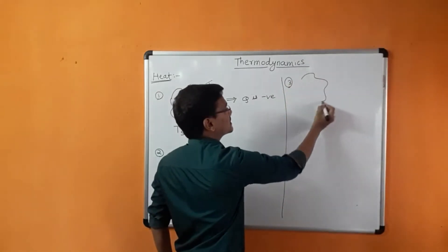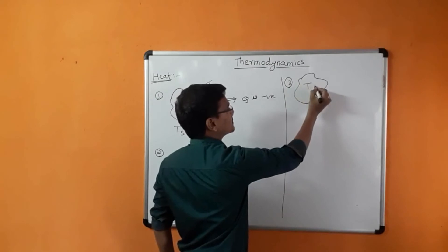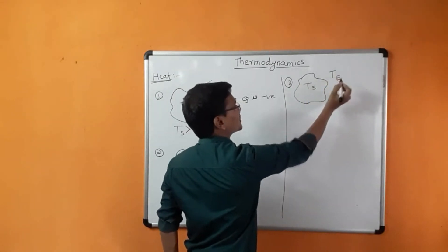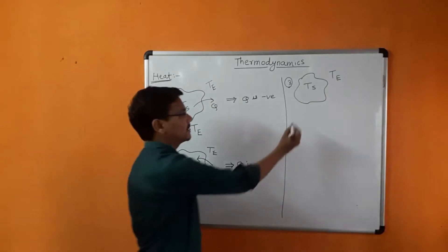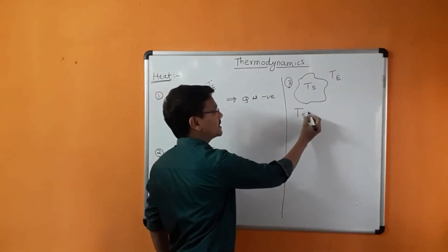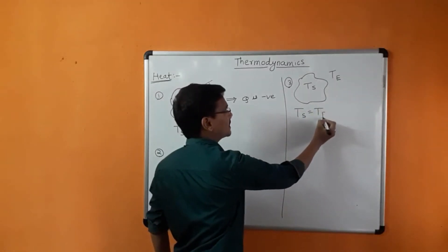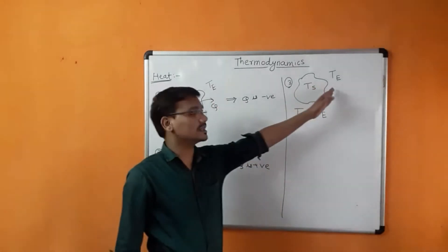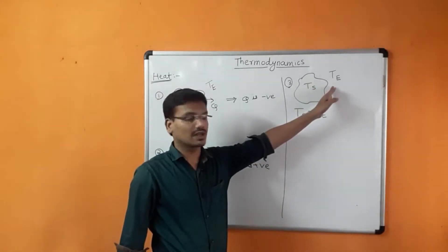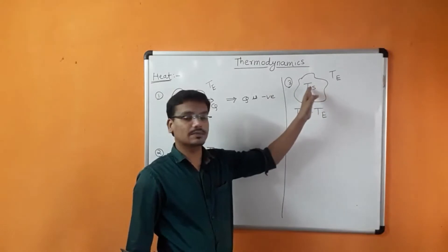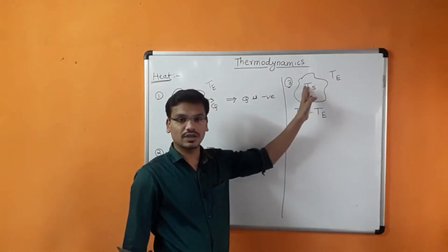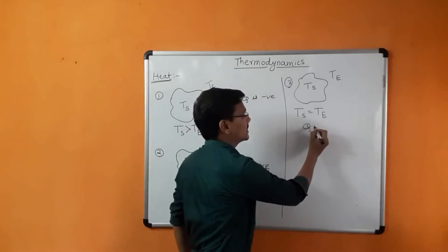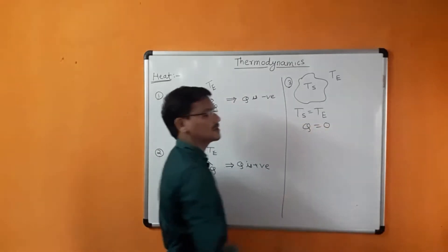Third case: consider again a system with temperature of system and temperature of surrounding. If the temperature of the system equals the temperature of the surrounding, then the two are in thermal equilibrium with each other — meaning both have the same temperature and no heat transfer occurs. Therefore, in this case, Q, heat transfer, is zero.